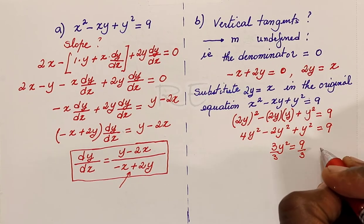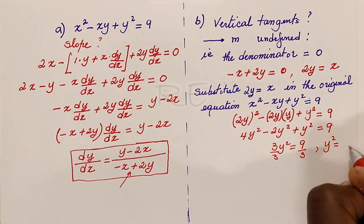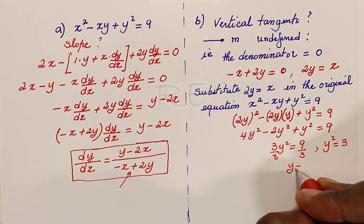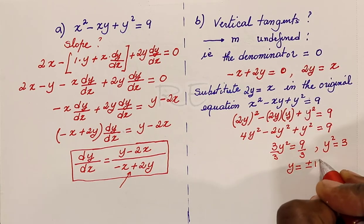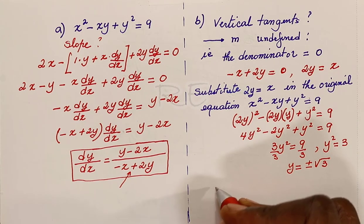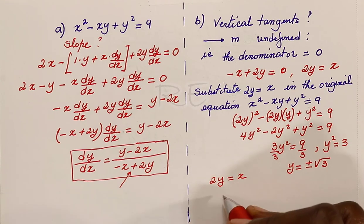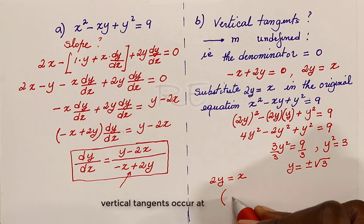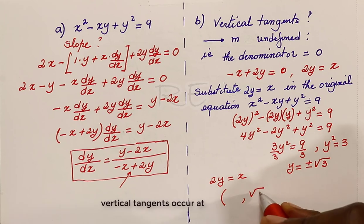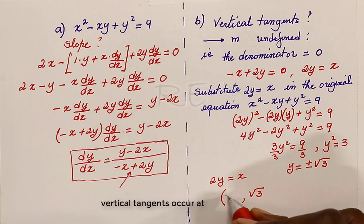3y squared equals 9, divided by 3 gives y squared equal to 3. And y is equal to plus or minus square root of 3. We know the relationship is x equal to 2y, so to find the x coordinate, we take the value of y, square root of 3, and multiply by 2.